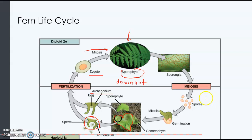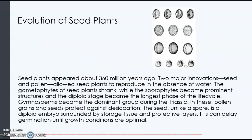If you turn the fronds — the little leaf-like structures — over, you will see these brown dots called sporangia on some of the leaves. Those sporangia contain and produce the spores, so they divide by meiosis and produce the haploid spores. The spores land on the ground and germinate, and those haploid spores germinate into a haploid gametophyte. It's very similar to the moss life cycle.